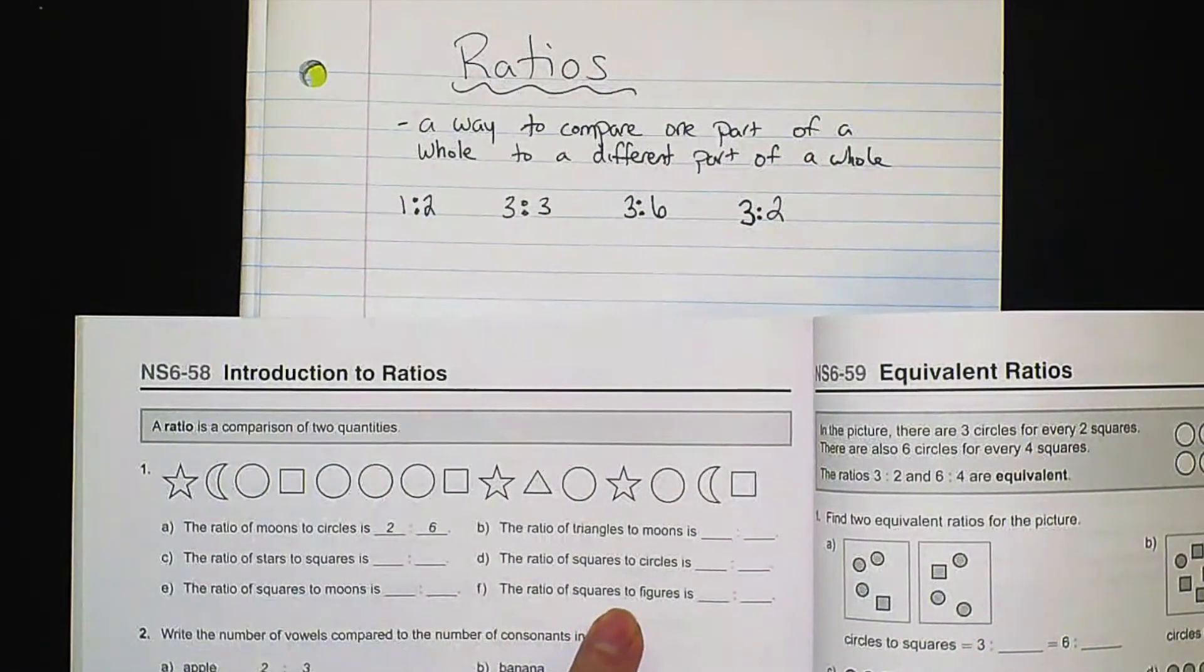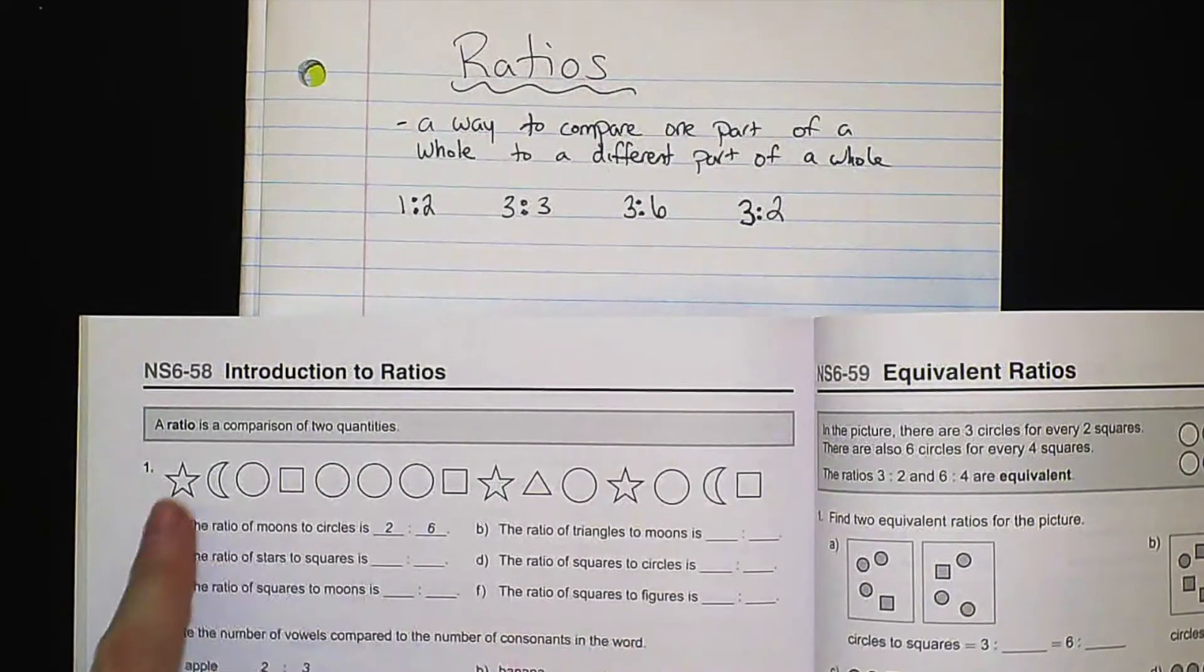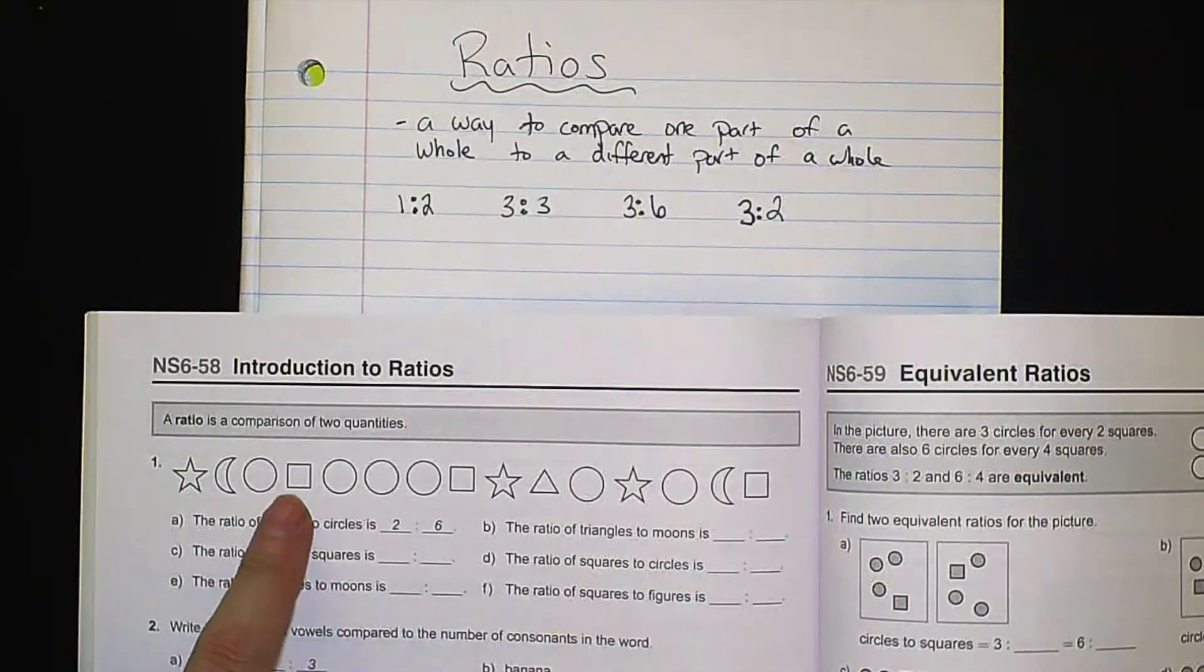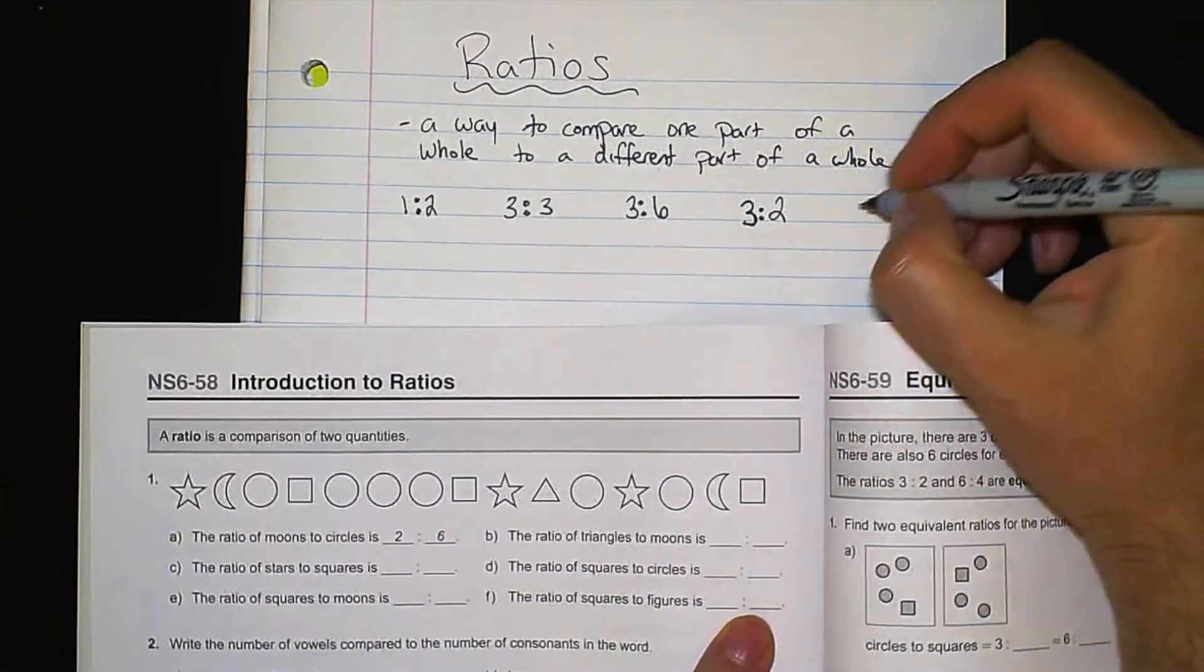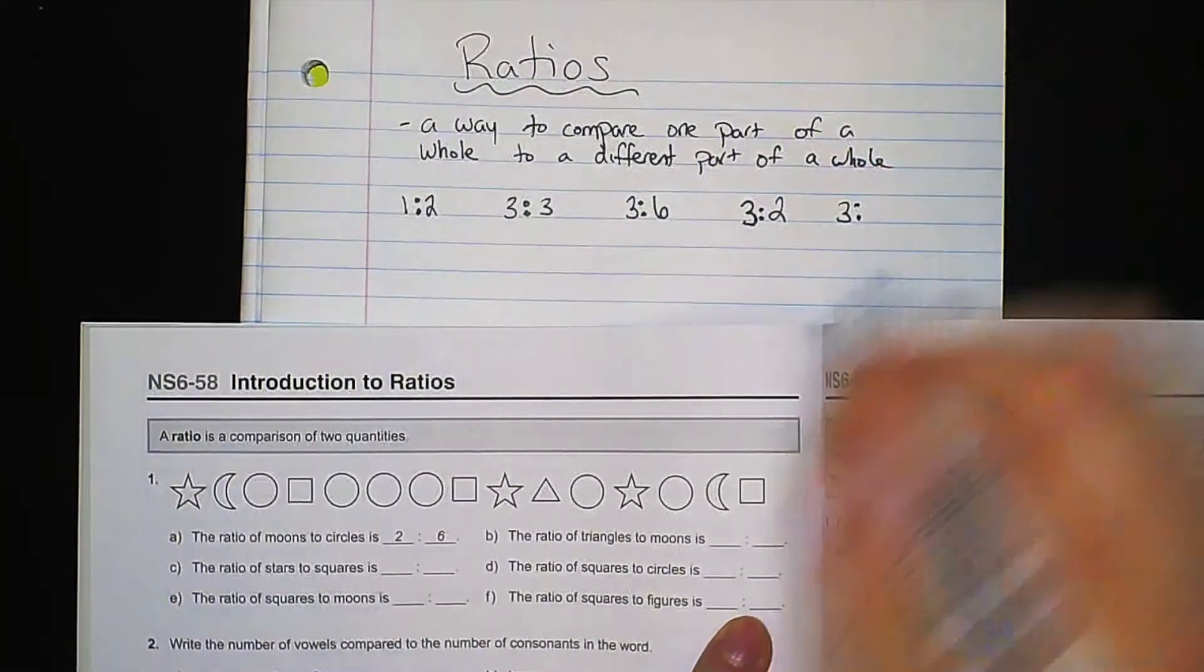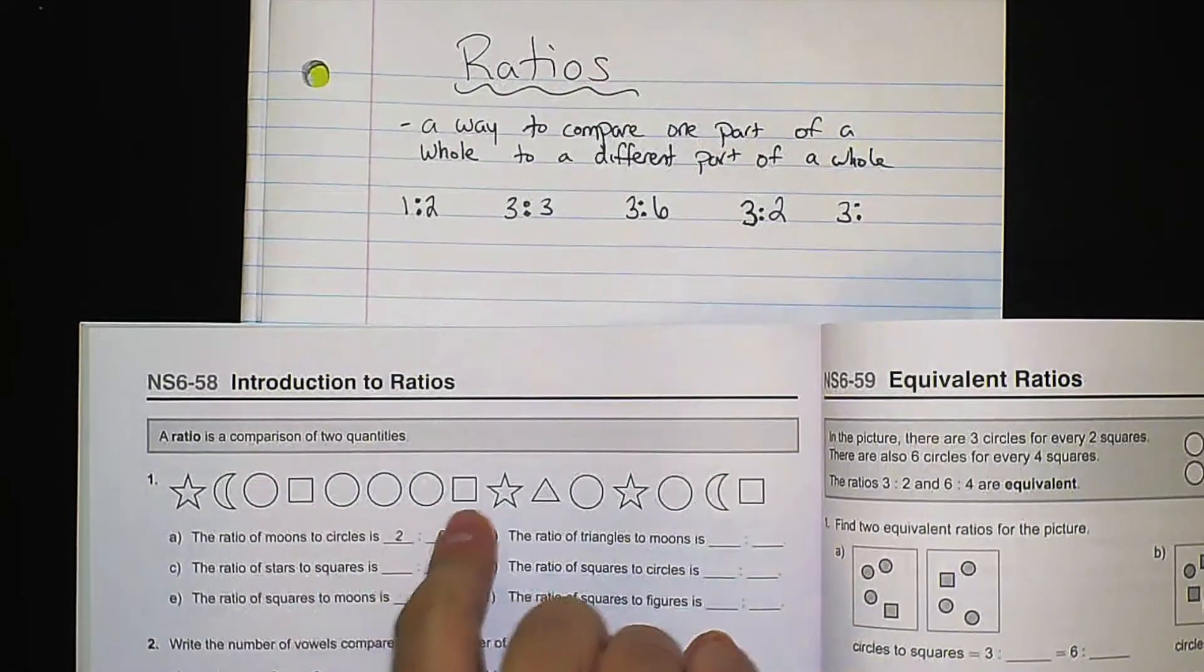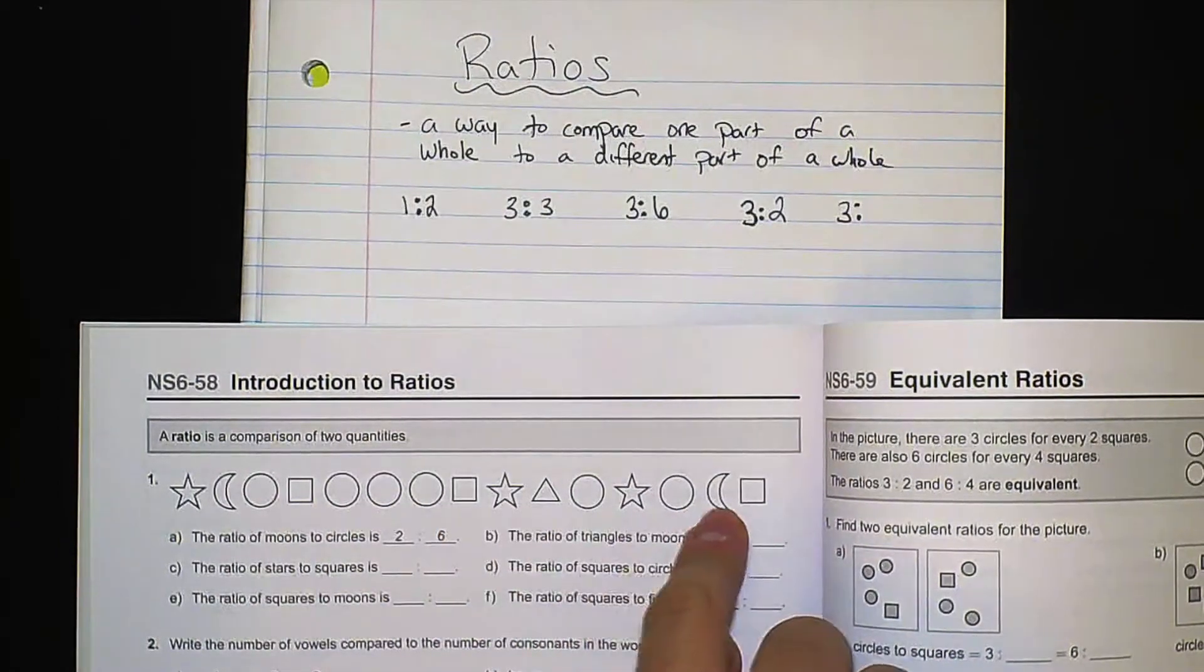And the last one is squares to figures. So figures means all of them. So there are one, two, three squares. And the total figures, one, two, three, four, five, six, seven, eight, nine, ten, eleven, twelve, thirteen, fourteen, fifteen.